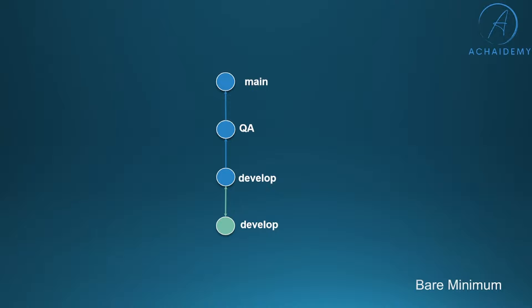Even if you have just two developers or no formal branching strategy, the minimum strategy you must apply is to have a main branch as your default from where production deployment happens, then have a QA and develop branch where you can control code changes, do regression and functional testing in QA, and finally deploy into production from the main branch.